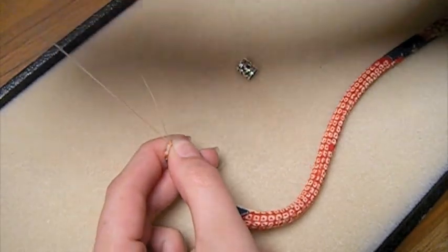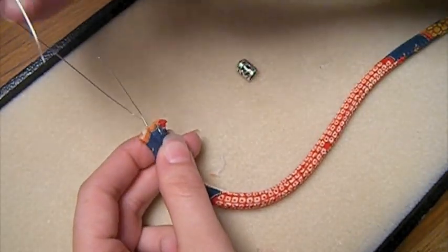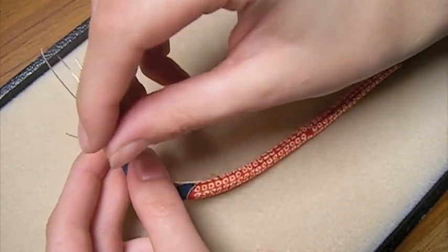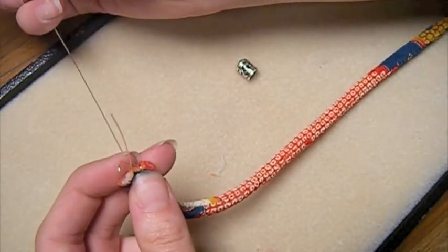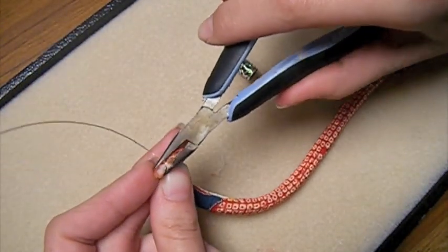So one more time. You bring the tail that's in the back around. Pierce it through the front. Pull it. And then tighten it with your pliers.